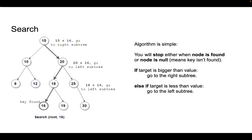In a Binary Search Tree, all values are inserted to the left sub-tree if the value of the new node is less than its parent's value, and if it's bigger than its parent's value, it's inserted to the right sub-tree. For example, 15 is a root node, and all values less than it go to the left sub-tree, while values in the right sub-tree are bigger. This rule applies to each node that has children. For example, 10 has a left sub-tree with values less than 10, and its right child is bigger than 10.